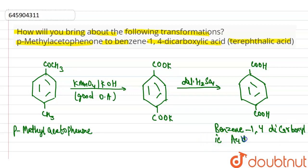So that is the conversion between p-methylacetophenone to benzene 1,4-dicarboxylic acid. Thank you.